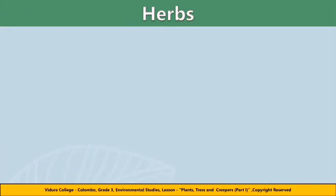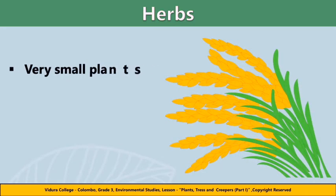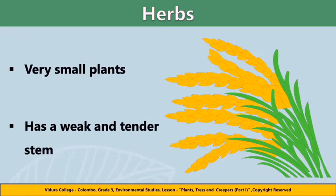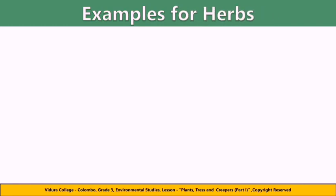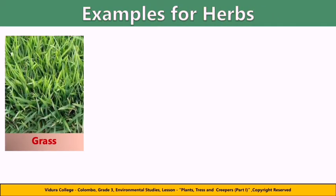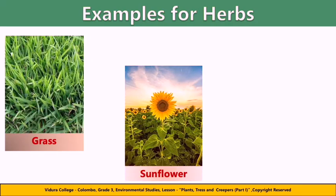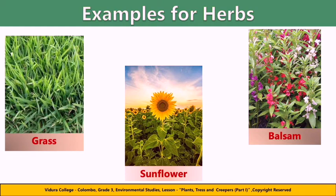Now we are going to learn about herbs. Herbs are very small plants with a weak and tender stem. Let's learn some examples for herbs. Grasses grow almost everywhere on earth because they can survive in many different climates; the leaves of grasses usually look like blades. Sunflowers are useful plants with large flower heads — they are named for the way they turn their blooms from east to west to follow the sun. Balsam is an ideal plant for containers and areas along walks or paths; its cup-shaped flowers come in shades of white, pink, red, purple, etc.